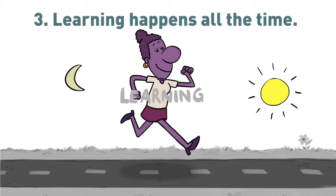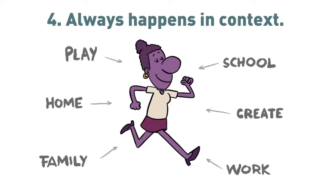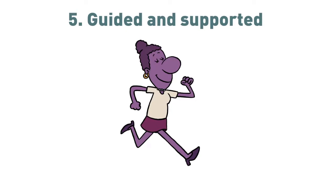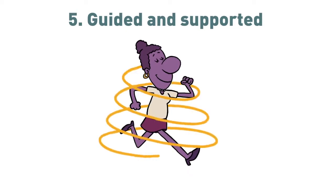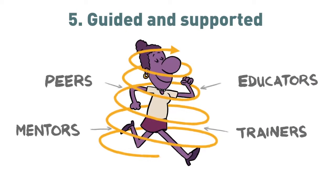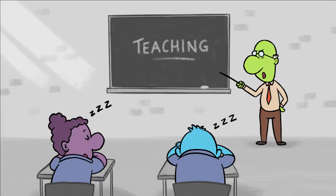until the time we die. Four: learning always happens in a context — for example, school, work, home, play, and family. Five: learning happens fastest when it is guided and supported by peers, mentors, educators, and trainers.